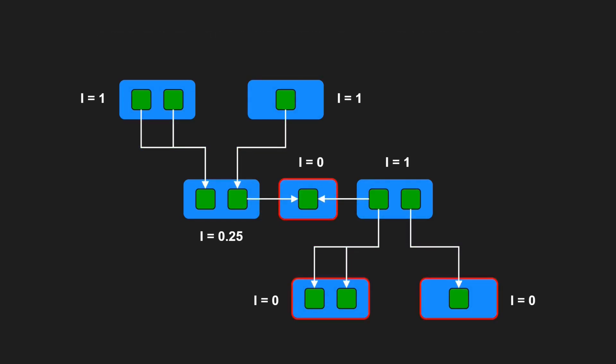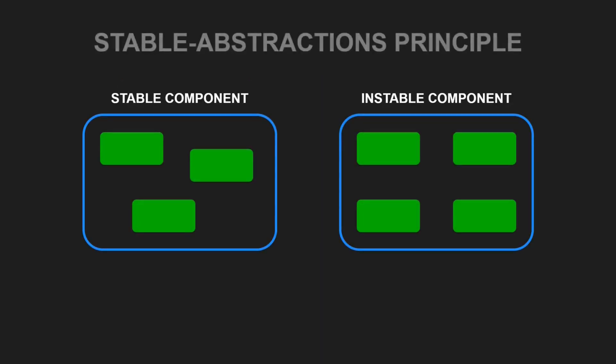And what about those stable components? These components should contain the architecture and high-level design of our software. In fact, we do not expect and also do not want them to change frequently. But if our high-level design is hard to change, does this mean it is inflexible? This question brings us to the third stability principle, the stable abstractions principle, which states, a component should be as abstract as it is stable.